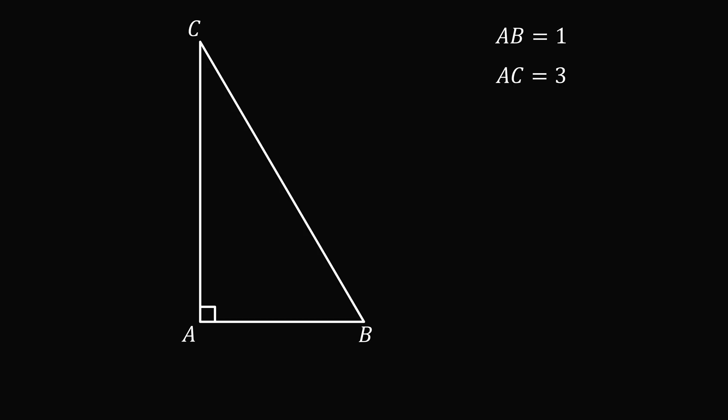That means BC is the hypotenuse, so it will be equal to the square root of the square of 1 plus the square of 3. This is equal to the square root of 10.